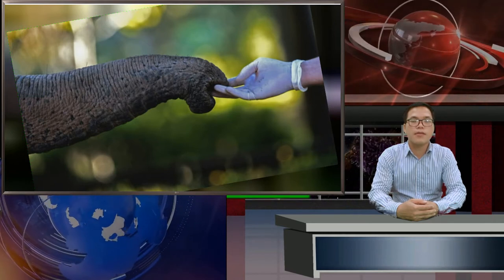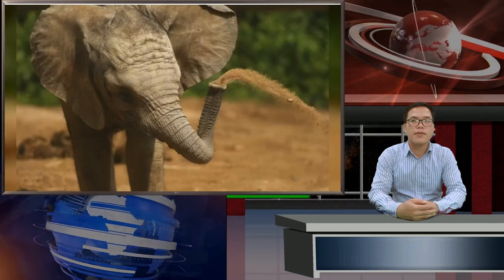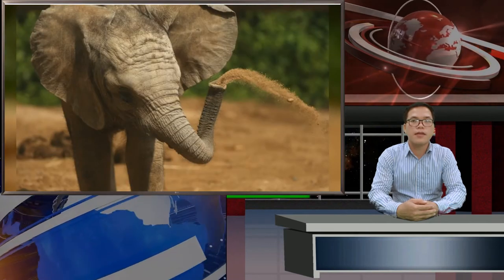The elephant chose not to use vacuum power, however, when offered grains of bran measuring about 1 millimeter, presumably to avoid getting the grains lodged in its trunk. The study noted instead the trunk tip squeezed the bran together to pick them up.